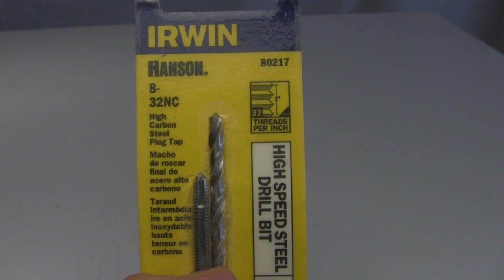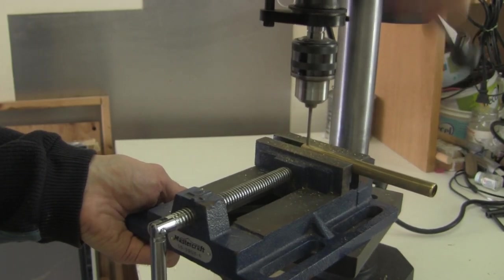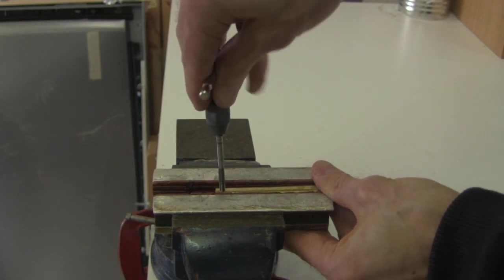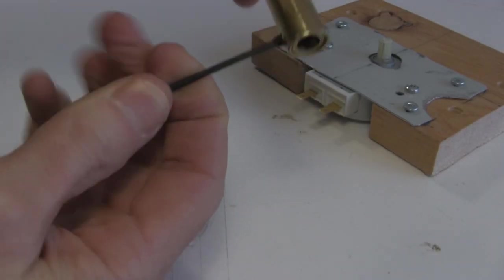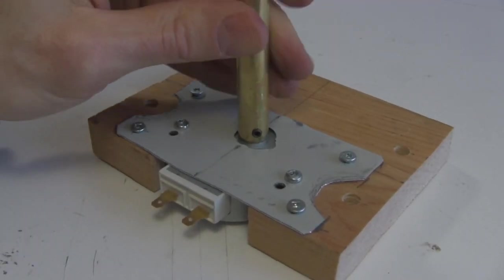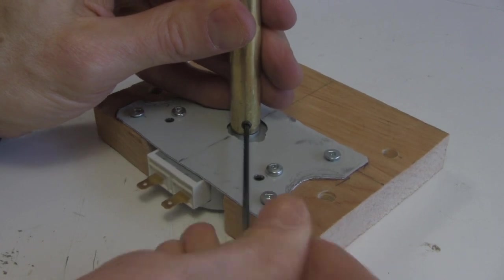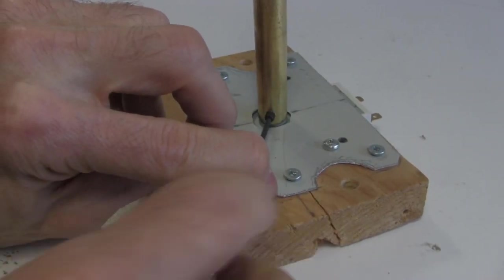So I got out an 8-32 tap set and drilled two holes, one on either side of the brass shaft. I then tapped the holes, basically making screw threads. I then screwed in a set screw part way using an allen key. I put the brass tubes on the generator shaft with the set screw against the flat part of the generator shaft. After putting that one in, I turned it around and put in the other set screw on the other side.